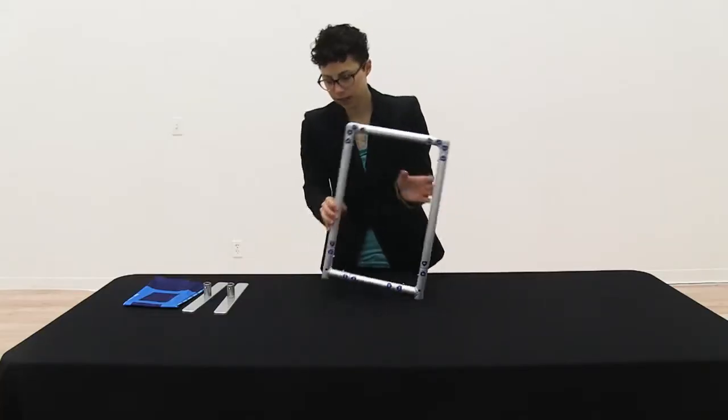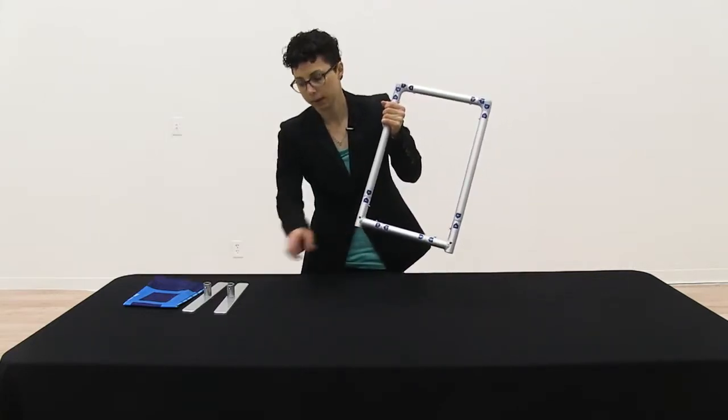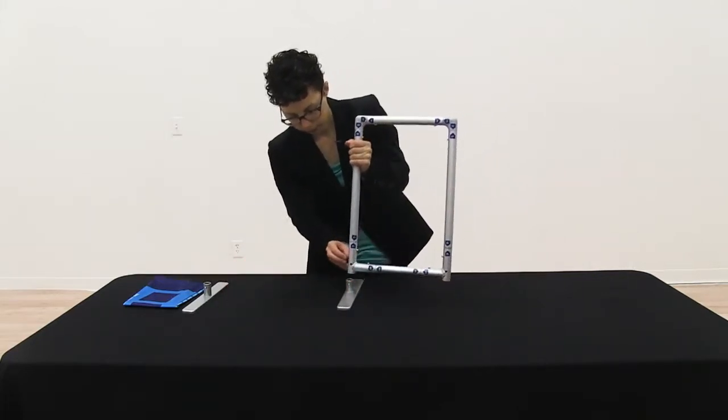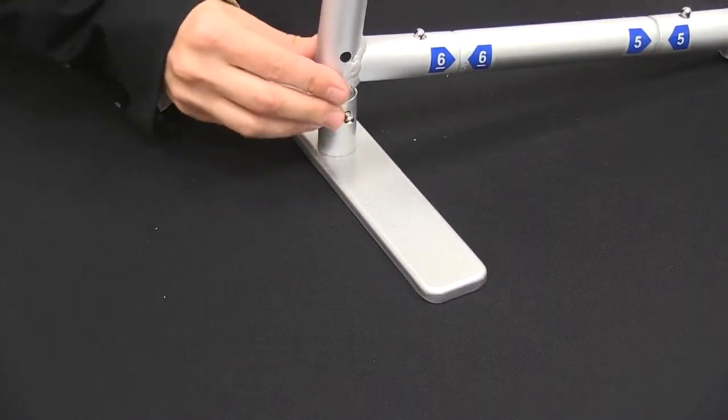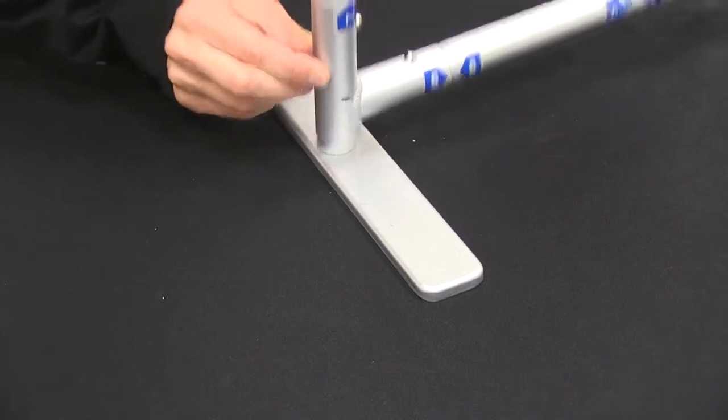Now I'm going to attach the feet. To attach the feet you're just going to attach them to the bottom hole. I'm just going to align it and then push the snap button to secure. I'm going to repeat the same step for the other foot.